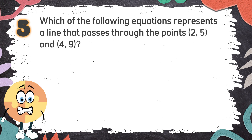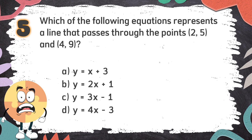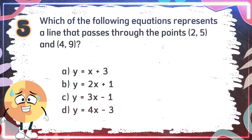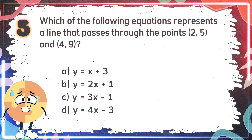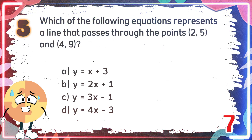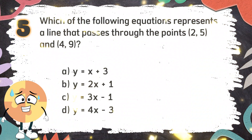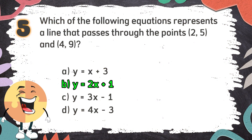Number 5. Which of the following equations represents a line that passes through the points (2, 5) and (4, 9)? The choices are: A. Y = 4X + 3, B. Y = 2X + 1, C. Y = 3X - 1, D. Y = 4X - 3. The correct answer is B. Y = 2X + 1.